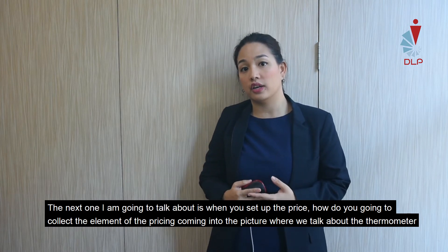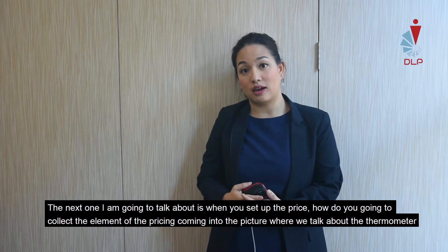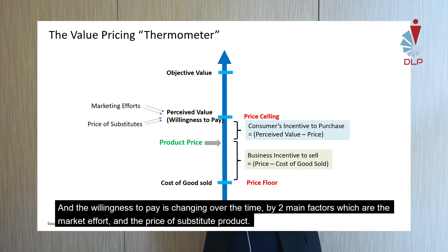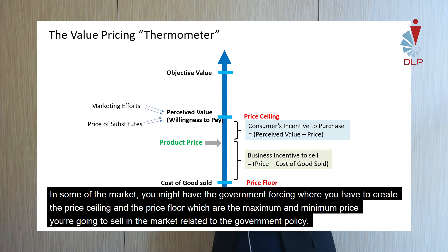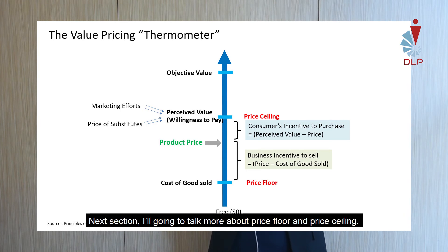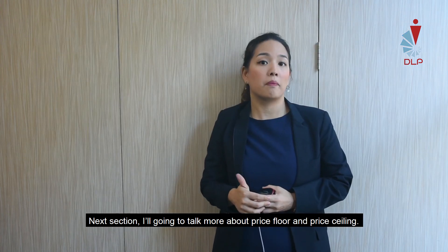Next, I'll talk about how, when you set a price, you collect all the elements into one picture using what we call the thermometer. The thermometer starts from the cost of goods sold, then the product price, then the willingness to pay — which changes over time based on market effort and the price of substitute products. In some markets, the government may also set a price floor and a price ceiling — the minimum and maximum price you can sell at based on regulations. When you plot all of these together in the thermometer, you can see the maximum margin available to you. The next section will cover price floor and price ceiling in more detail.